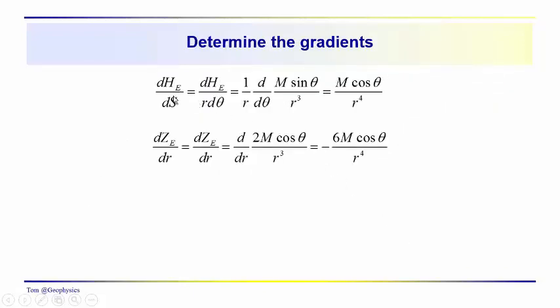So the horizontal gradient of the horizontal field, just to take an example, we would take the derivative of H_e with respect to r d theta, or 1 over r times dH_e/d theta. And the horizontal component of the Earth's magnetic field would be M times the sine of theta over r cubed. And we're taking this derivative in this case with respect to theta. So that gives us a cosine of theta. So that gives us a horizontal gradient equal to M times the cosine of theta over r to the fourth.